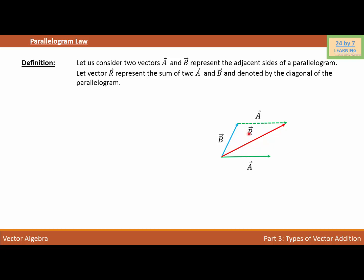Now as you can see, vector R is vector A plus vector B. But I need to complete the parallelogram — I'm missing a side over here. So I'm going to draw a vector exactly the same as vector B. Now this is a four-sided figure that looks exactly like a parallelogram. To find the sum of vectors A and B, either I can consider the upper part of the parallelogram and get A plus B equals R, or I can consider the lower part and get exactly the same thing: R equals A plus B.